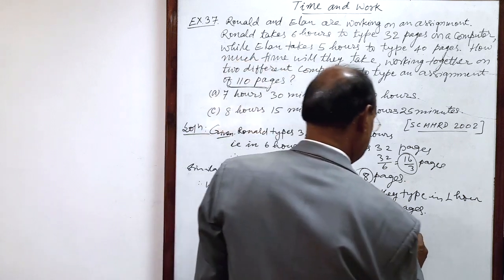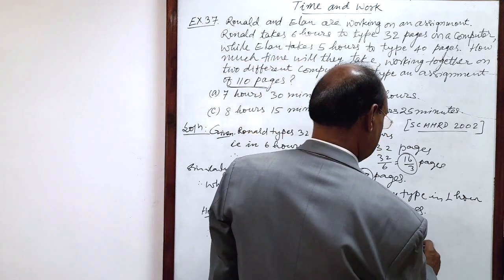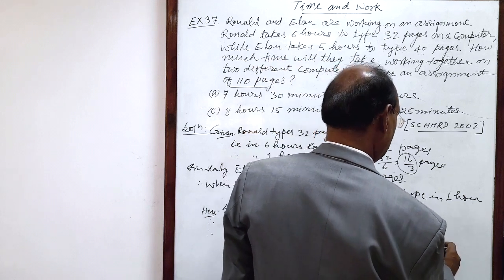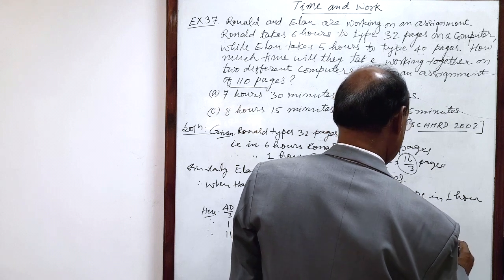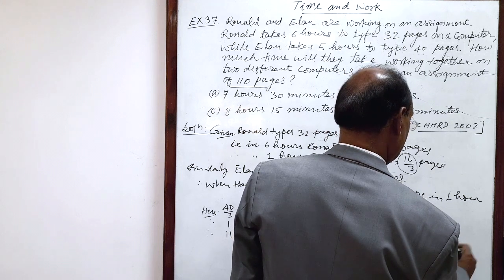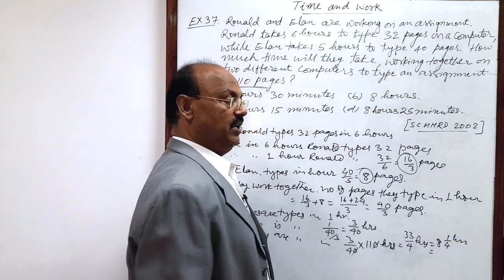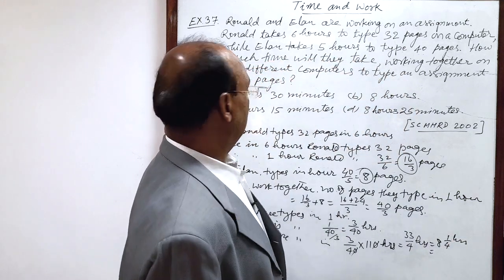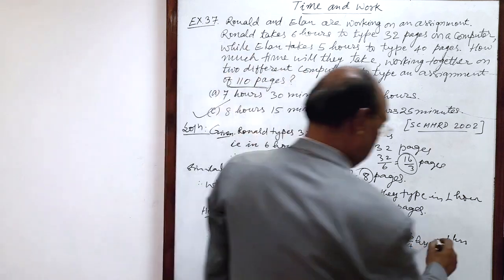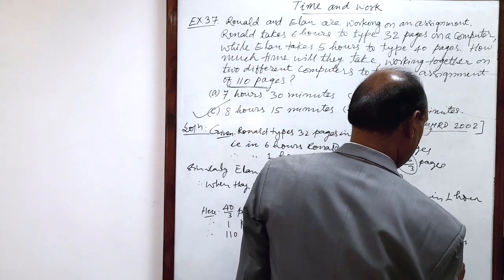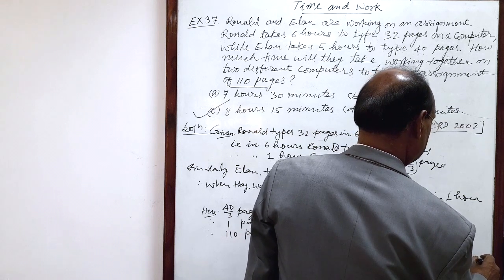So, this is 33 by 4 hours, and this is equal to 8 and 1 by 4 hours. 1 by 4 hours means 15 minutes. So, 8 hours 15 minutes, answer will be C, because this is equal to 8 hours 15 minutes.